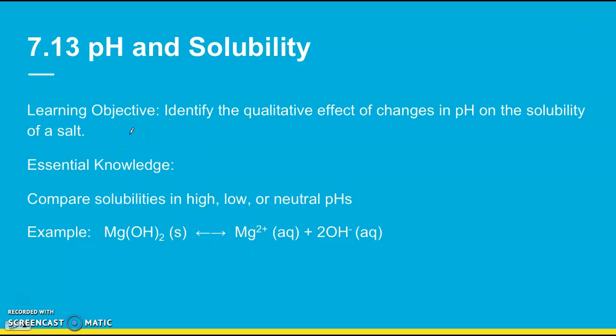7.13 is on pH and solubility. The learning objective is identify the qualitative effect of changes in pH on the solubility of a salt. Again, the term qualitative means this isn't a calculation. We just have to describe what's happening. So with this, we want to compare solubilities of some salts in high, low, or neutral pHs. And the type of salts that we're talking about are usually things that contain hydroxide ions, like magnesium hydroxide. This is a partially soluble salt that produces magnesium ions and two hydroxides.